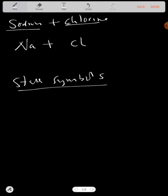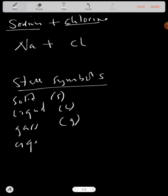State symbols are just symbols at which a substance can exist. It can be a solid, a liquid, a gas, or aqueous. We have solid (s), liquid (l), gas (g), and aqueous (aq). These are the four state symbols.